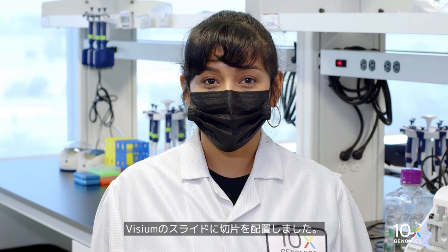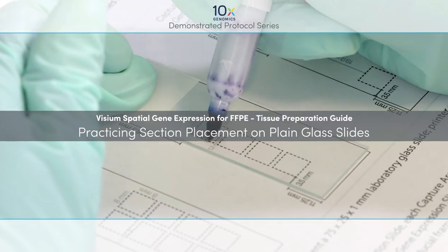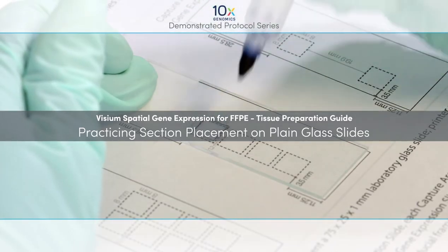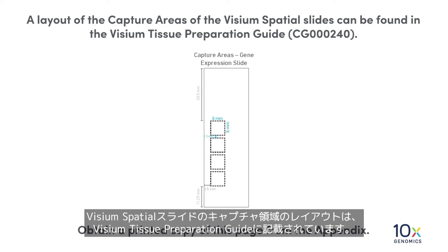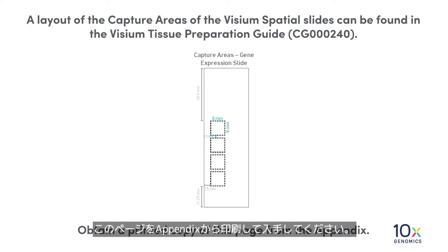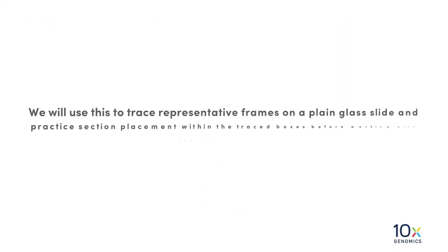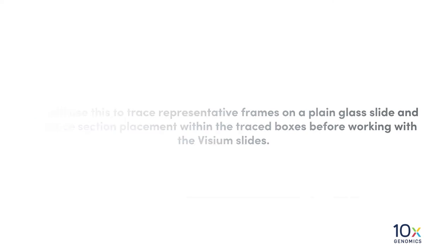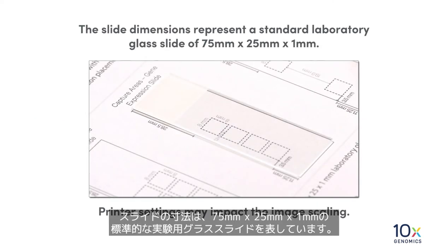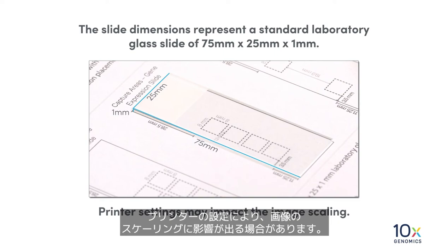We have placed the sections on Visium slides. Next we can proceed to deparaffinization and staining. We are ready to practice section placement on plain glass slides. A layout of the capture areas of the Visium spatial slides can be found in the Visium Tissue Preparation Guide — obtain a printed copy from the appendix. We will use this to trace representative frames on plain glass slides and practice section placement within the traced boxes before working with the Visium slides. The slide dimensions represent a standard laboratory glass slide of 75 millimeters by 25 millimeters by 1 millimeter. Printer settings may impact the image scaling.